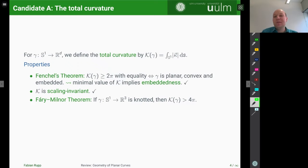So the first one I want to introduce is the total curvature, which is just given by the integral of the length of the curvature vector integrated with respect to the arc length element. This is a very, very well studied energy, I would say. There are multiple nice results about this quantity.